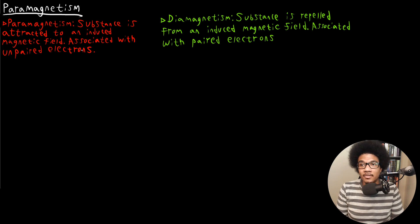So what paramagnetism is, it's when a substance is attracted to an applied magnetic field. And what that means for us in chemistry is that this effect of a substance being attracted to an induced magnetic field is usually associated with the existence of unpaired electrons.